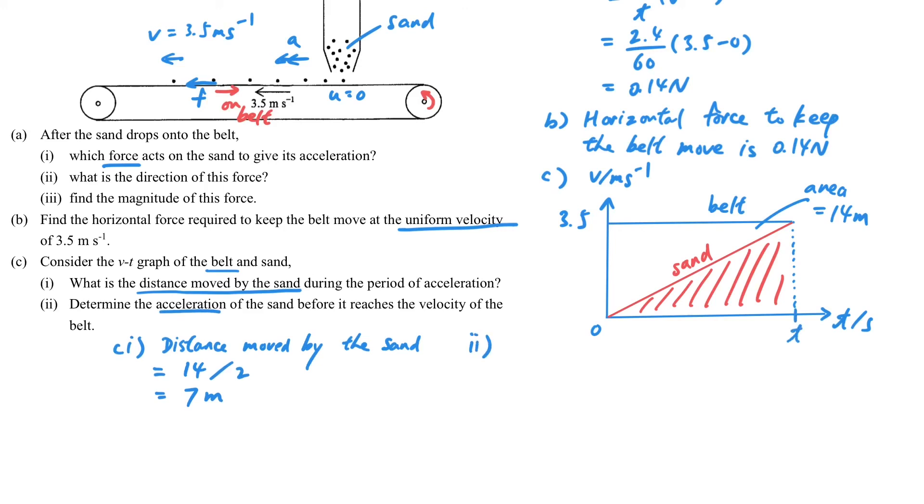Then, because we have this Vt graph, finding the acceleration is easy. Firstly, we have to find the t by using the area 14. After we got the t, then we can use the slope y2 minus y1 over x2 minus x1. So here it is 3.5 minus 0 over 4 minus 0. We can use this to get the acceleration of the sand also.